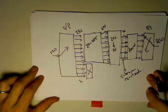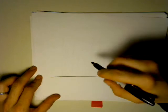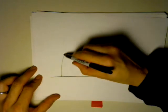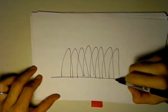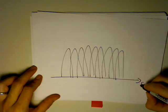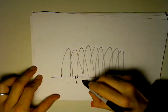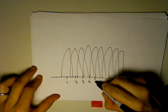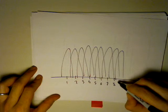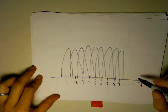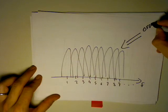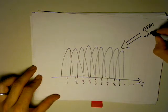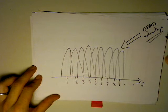Spectrally, every subcarrier is going to look like a sinc pulse across the frequency domain — subcarrier 1, 2, 3, 4, and so on. This is OFDM's key advantage: the subcarriers are spread across the frequency domain with spacing of 1/T between each one.